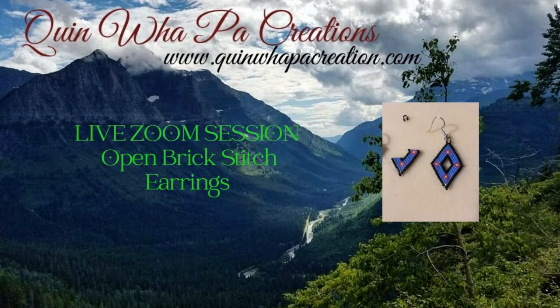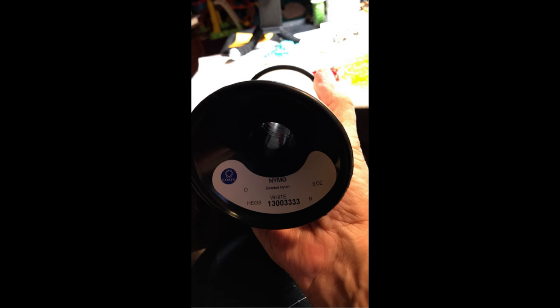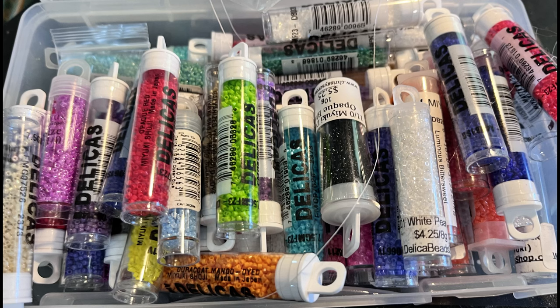This video is to show how I did the open brick stitch earrings that has the open section in the middle, in the center. I used size 0.9mm beading thread, size 12 beading needle, and size 11 delicas. Hope you enjoy the video. Thanks for stopping by.